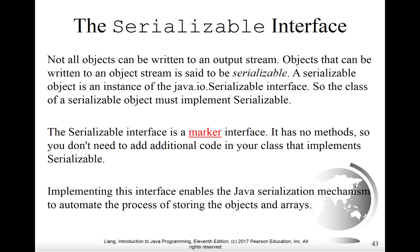Whether or not an object can actually be written to an output stream depends on whether or not it's serializable. The term serializable, as the name would imply, indicates that that particular object can be broken up into a sequence or series of bytes. You'll recall the existence of marker interfaces like Clonable and Comparable — this is yet another marker interface called Serializable. As a marker interface, it doesn't have any methods associated with it, so you don't need to implement any methods. When you say your class implements Serializable, it's simply marking your class as being able to be broken down and serialized into a sequence of bytes.